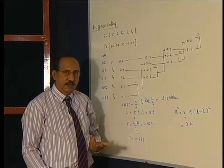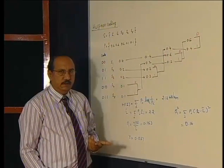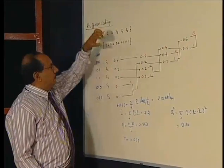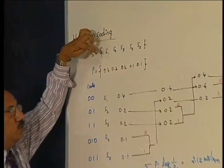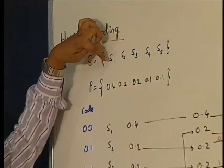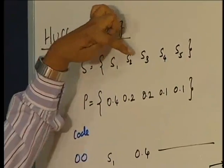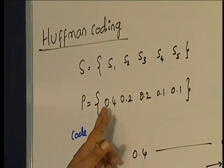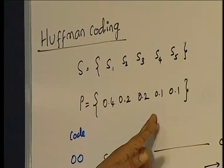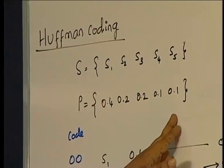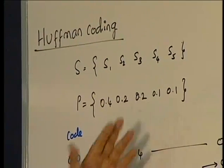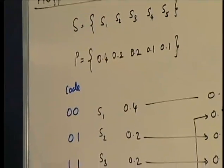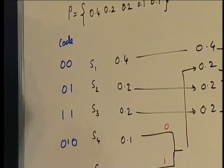Now where does the confusion lie? Let me take this example. My source will have five symbols S1, S2, S3, S4, S5 with probabilities 0.4, 0.2, 0.2, 0.1, and 0.1. According to Huffman coding, I have to arrange all these symbols in the order of decreasing probability.